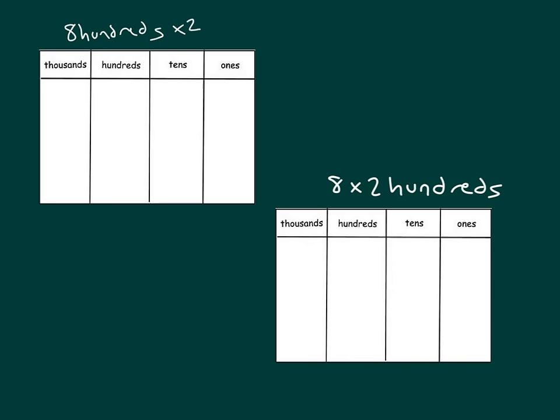Let's show these two problems within a place value chart. Here we have 8 hundreds times 2, and then here we have 8 times 2 hundreds. We'll model this portion here, the portion that is in unit form, 8 hundreds, and it says times 2. Let's see what that looks like. So I have 8 hundreds. That's 1, 2, 3, 4, 5, 6, 7, 8.